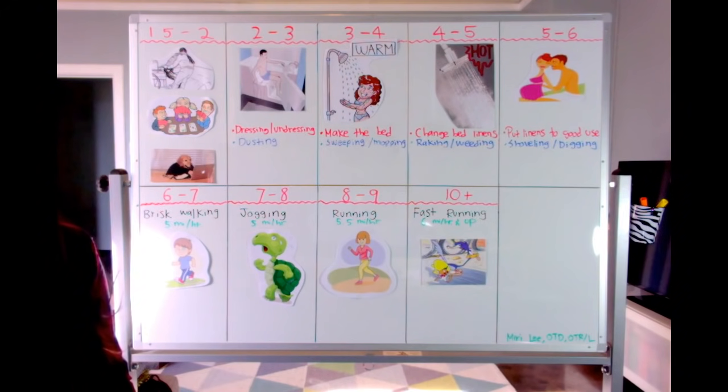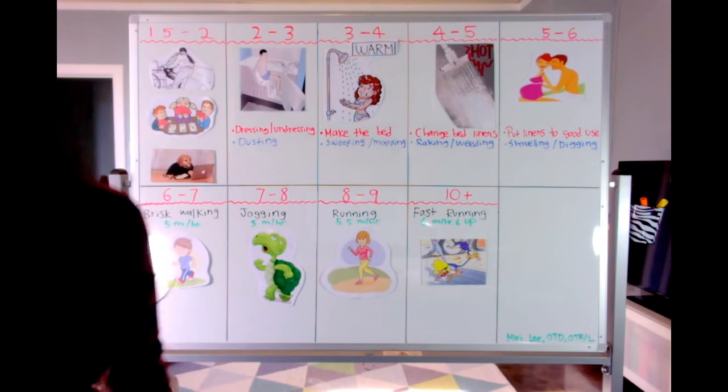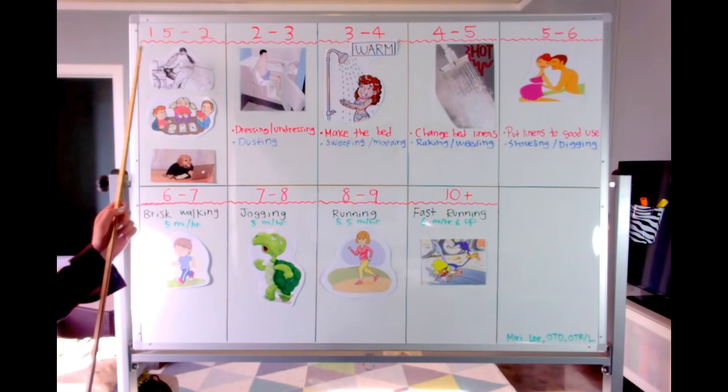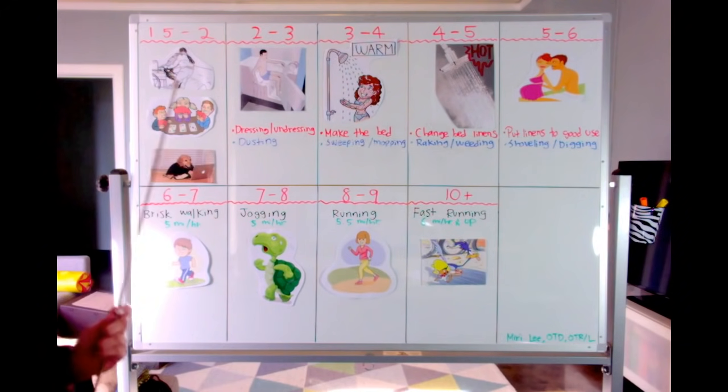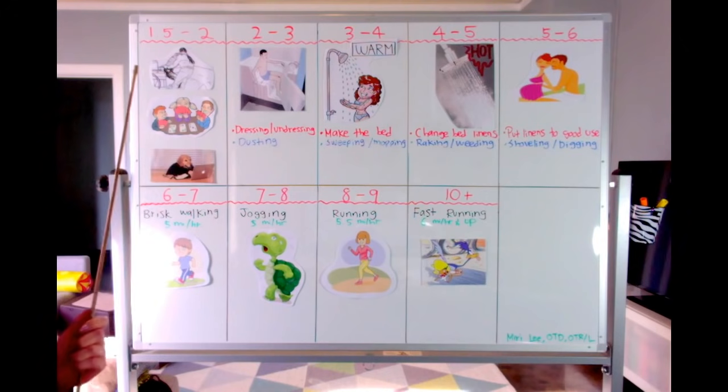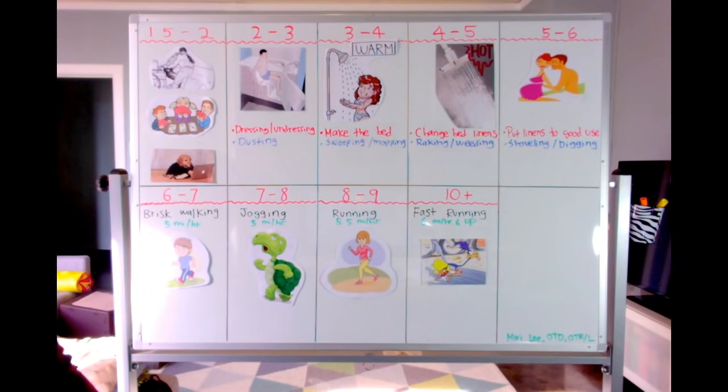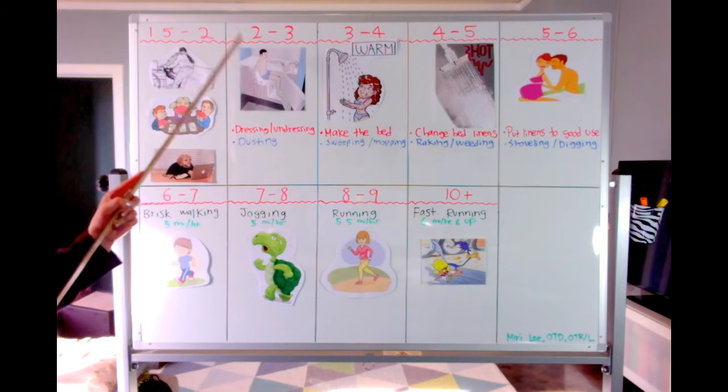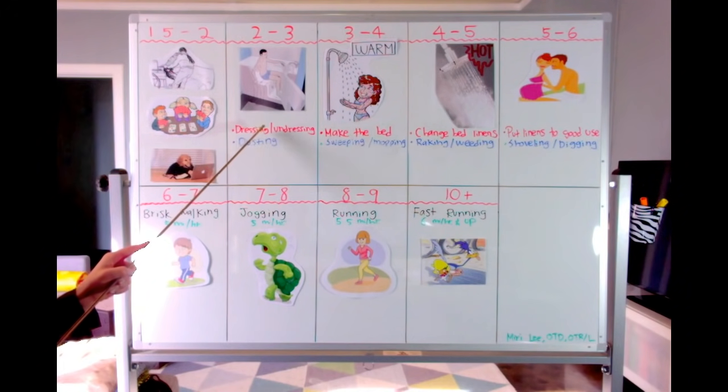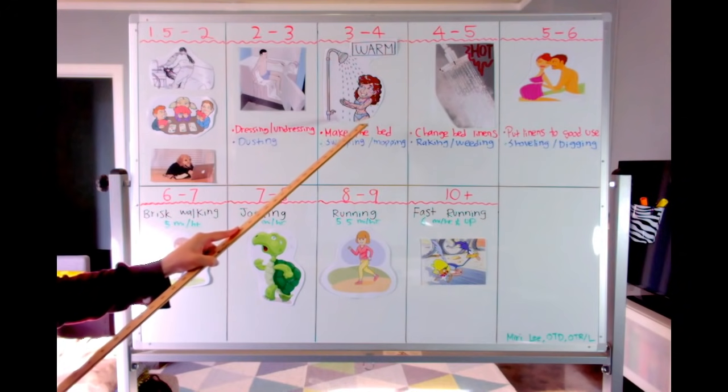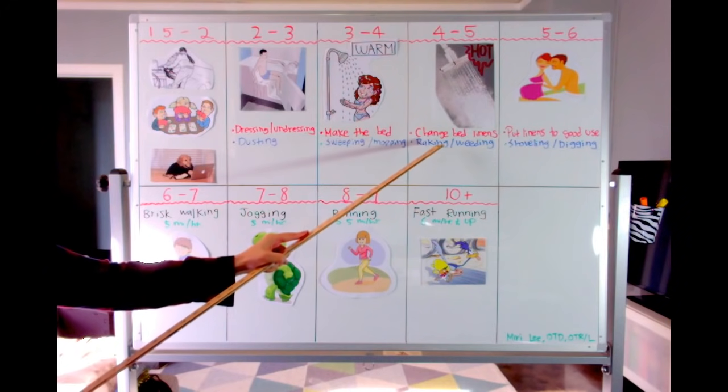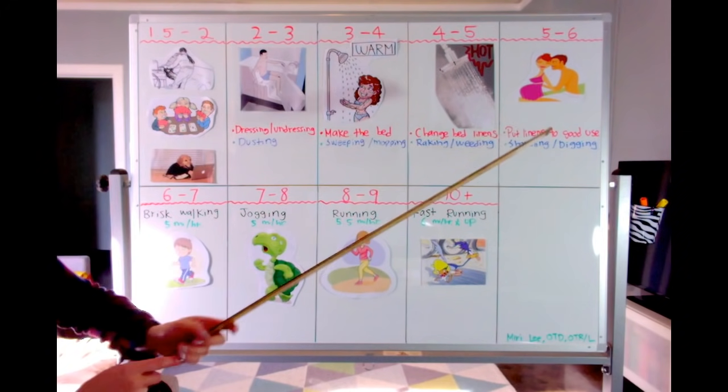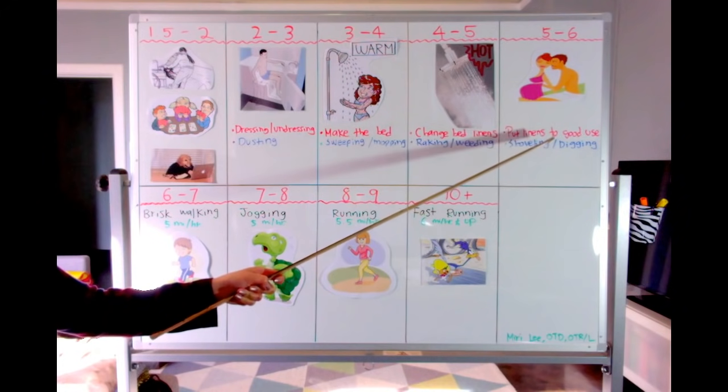Now that was a lot, but here's another way you can break down the information from 1.5 to 6. You'll see that I have color-coded some of these activities in red. You can make a narrative of how you lead up to sex: first here you gotta know how to dress and get undressed, right? Then you learn to make your own bed from 3 to 4. From 4 to 5 you're changing your linens to something sexy, velvety. And at 5 to 6 you are putting those linens to good use.